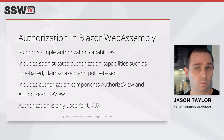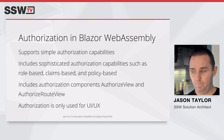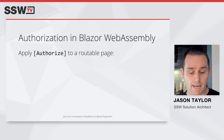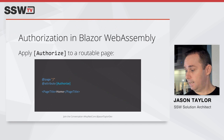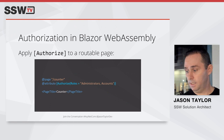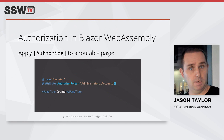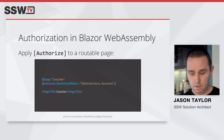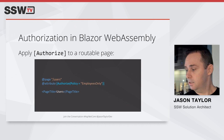With Blazor WebAssembly, the same Authorize attribute can be applied to a routable page. In one example, just applying the Authorize attribute means you must be authenticated to access the homepage. In the next example, the Authorize attribute specifies roles — Administrators or Accounts — meaning you need to be a member of either role to access the counter page. And for the user page, we've specified a policy — the employees-only policy — which requires you to have an employee number claim.